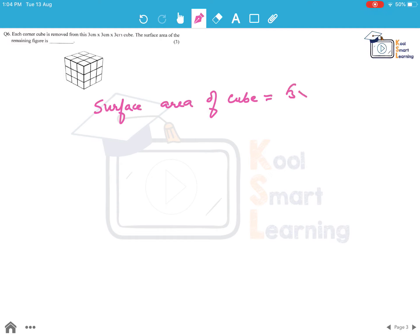This is equal to 6 A square where A is 3 cm, A is the side of the cube. So this is 6 into 9, this is equal to 54 cm square, is the surface area of this given cube.